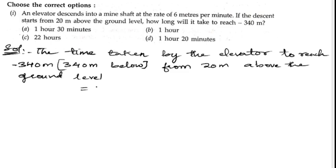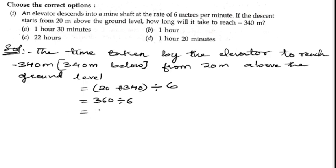That means we need to add these two distances: 20 plus 340, since they are moving down from the upper distance. For each 6 meters per minute, we divide to get minutes. So 340 plus 20 is 360, divided by 6, gives us 60 minutes.